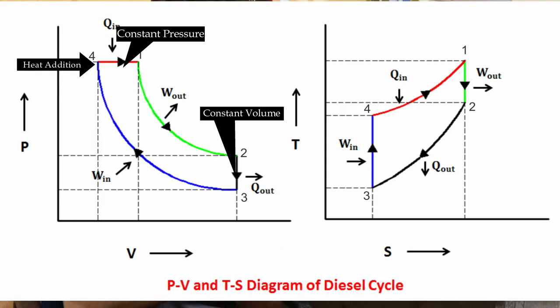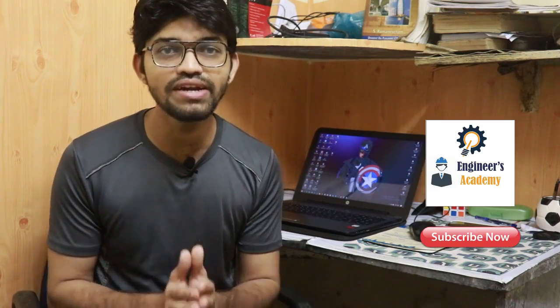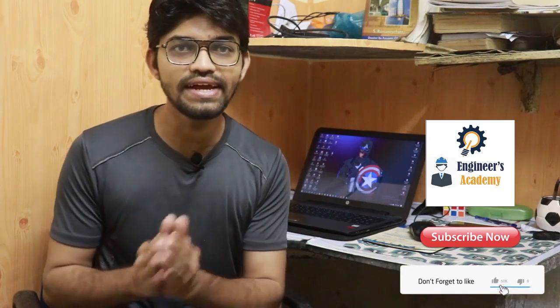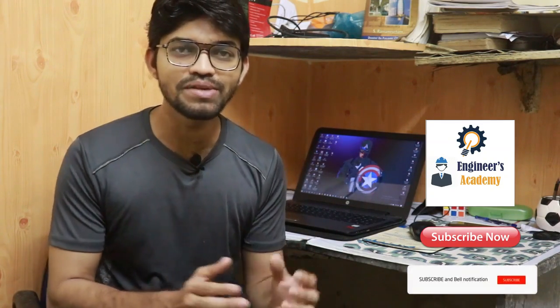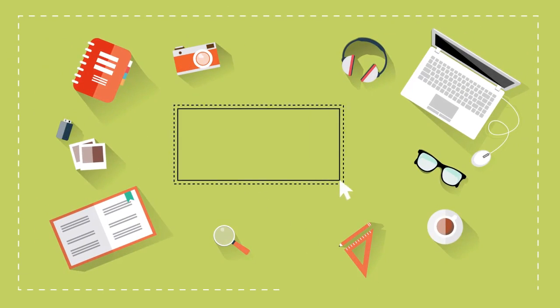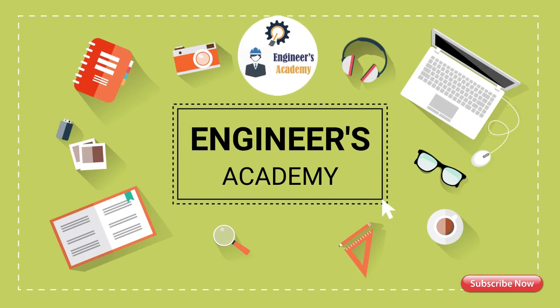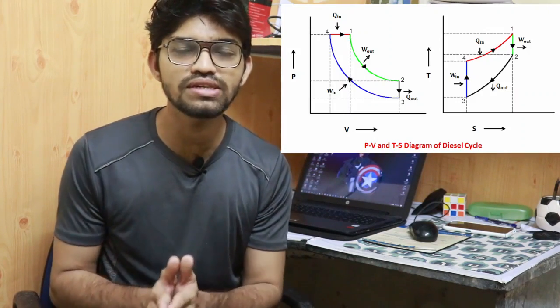In the diesel cycle, heat is added during the constant pressure process and heat is rejected during the constant volume process. The diesel cycle was invented by Rudolf Diesel, who modified the internal combustion engine to work on this cycle. The diesel cycle consists of four processes, as we have seen in previous videos.